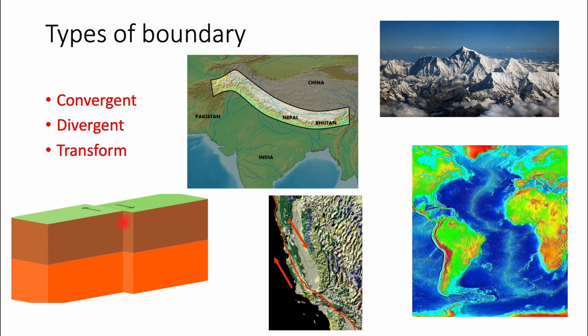The Himalayas are the tallest mountain region in the world — Mount Everest is 29,000 feet. The last time I was on a plane flying back from Costa Rica, we were at an altitude of 35,000 feet, meaning Mount Everest's peak was just 6,000 feet below where my plane was flying, which is absolutely wild. An example of a divergent boundary is the Mid-Atlantic Ridge.